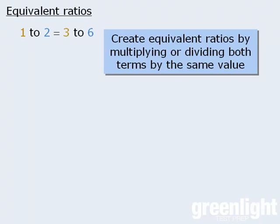We can create equivalent ratios by multiplying or dividing both terms by the same value. For example, if we take the ratio two to seven and multiply both terms by two, we get the equivalent ratio four to 14. Similarly, if we take the ratio three to four and multiply both terms by five, we get the equivalent ratio 15 to 20.